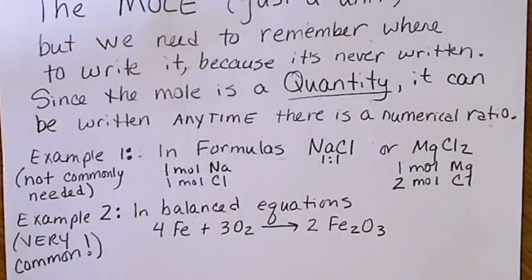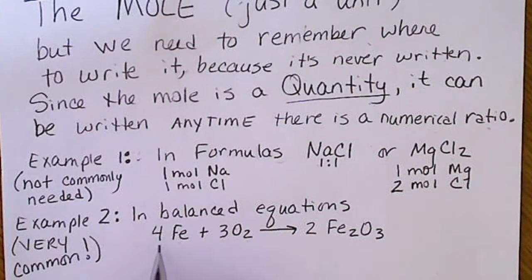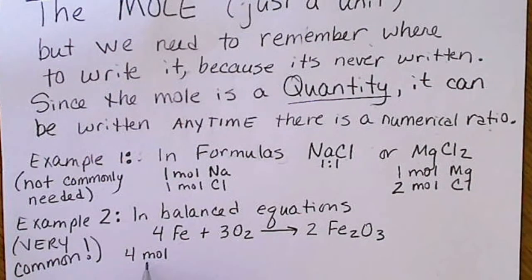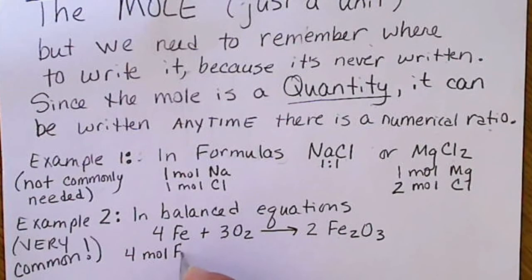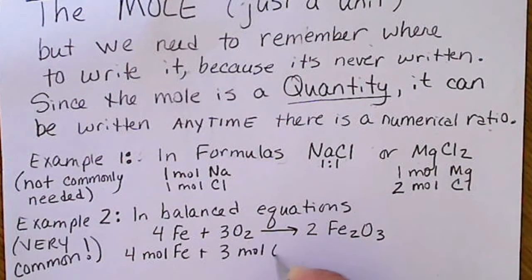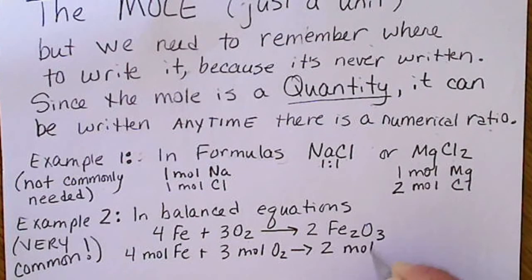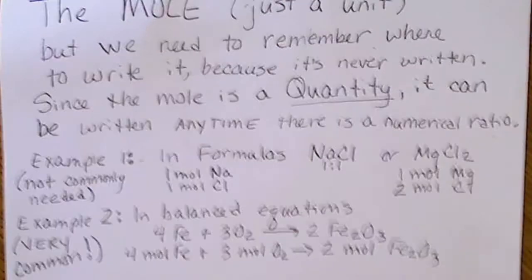So here's where we want to make sure, and it's a good idea to actually rewrite the balanced equation in terms of moles. So there's four moles of iron and three moles of oxygen, and we make two moles of Fe2O3.